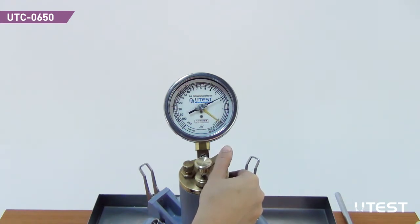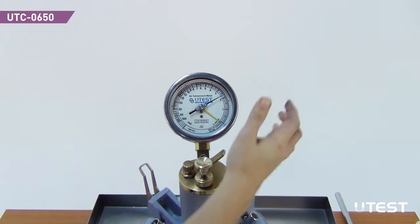Lightly tap the pressure gauge by hand to stabilize the gauge hand. Read the percentage of air shown on the dial of the pressure gauge.